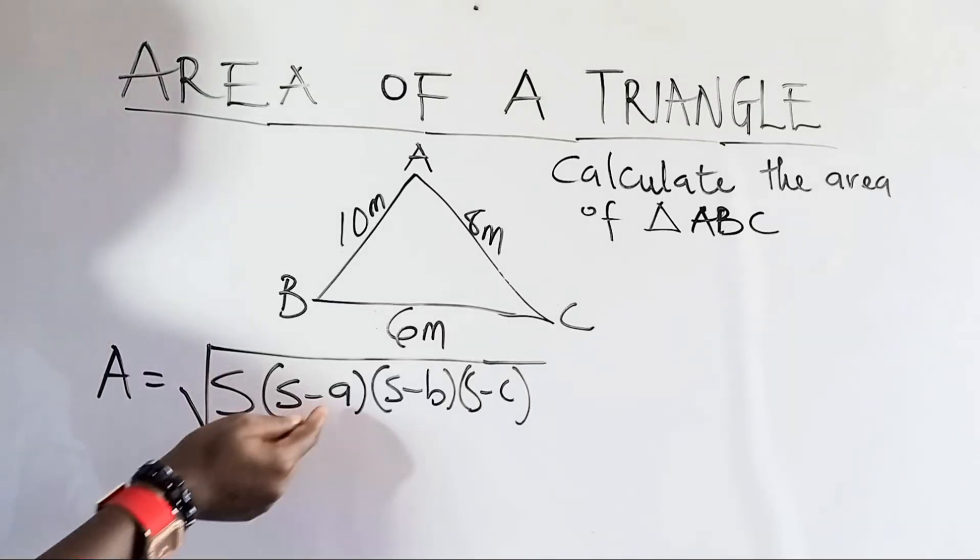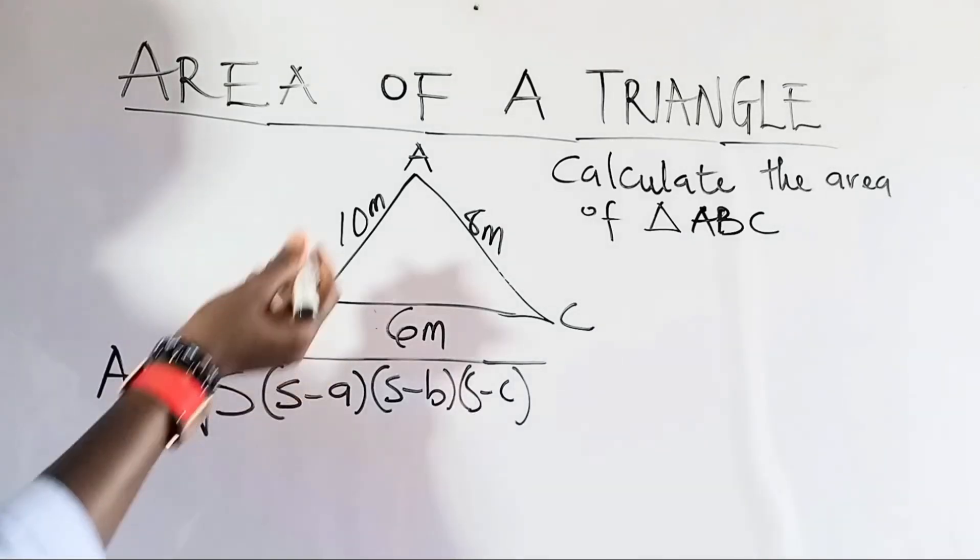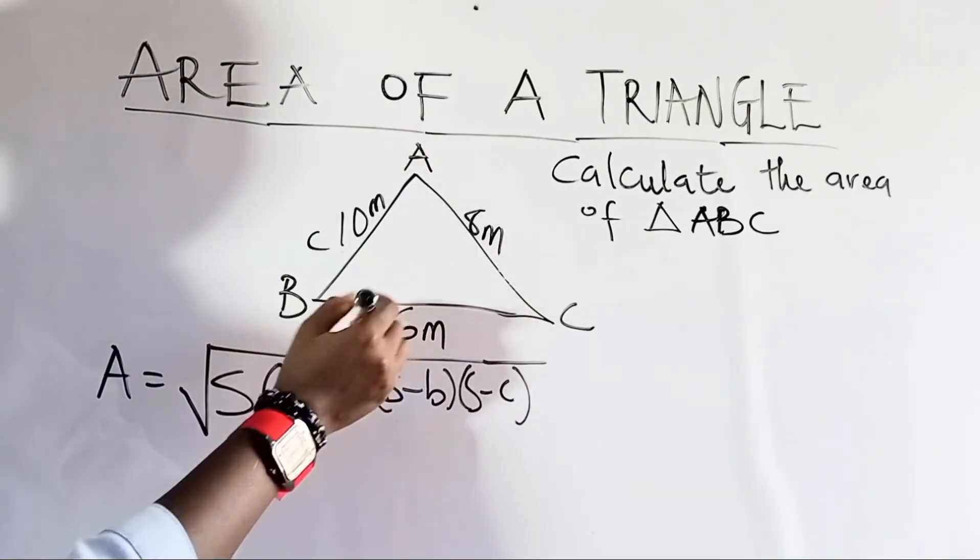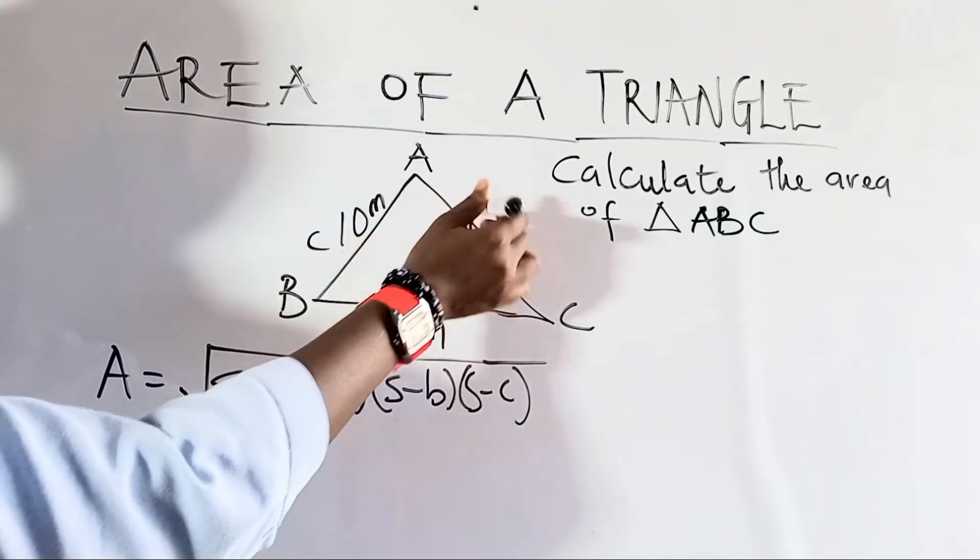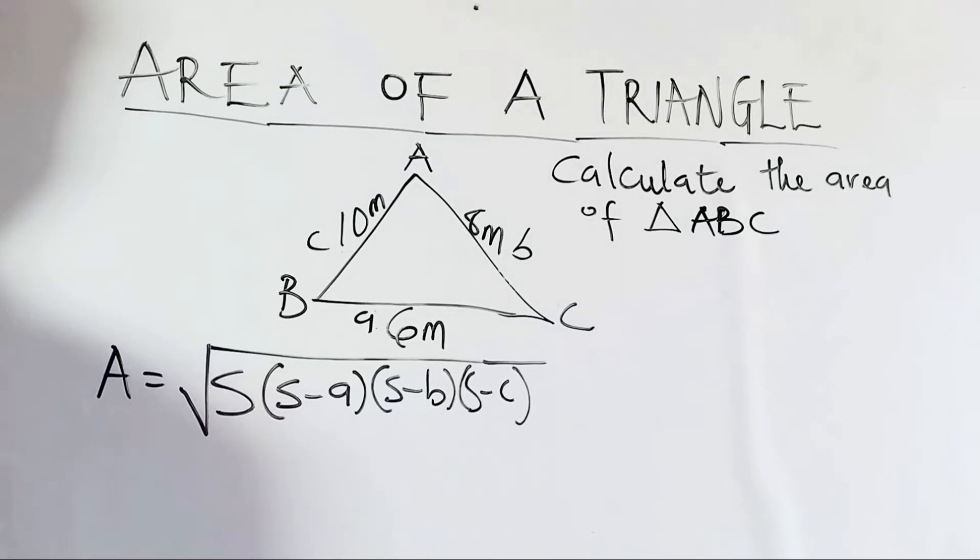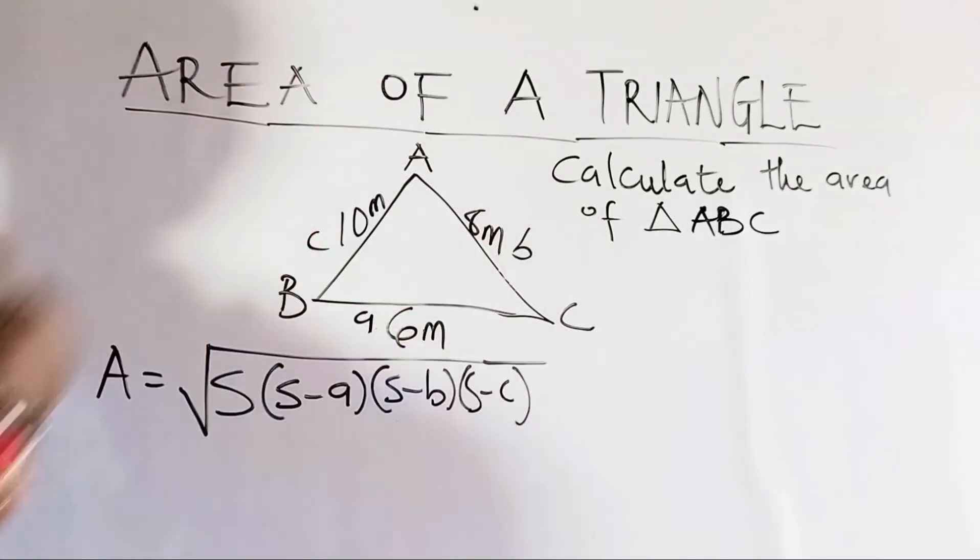So, a, b, and c represent the three sides of the triangle. So, we can label this side facing angle c to be c, side facing angle a to be a, and this side facing angle b to be b. So, these are the three sides of the triangle. Now, how do we find this s, which is also known as the semi-perimeter of the triangle?